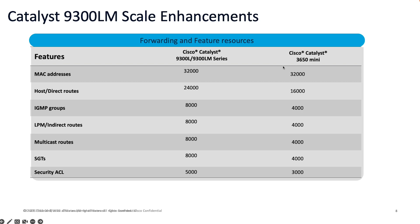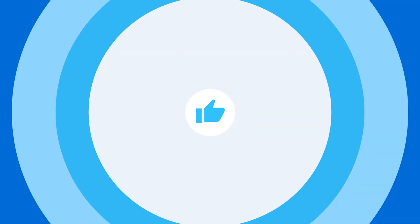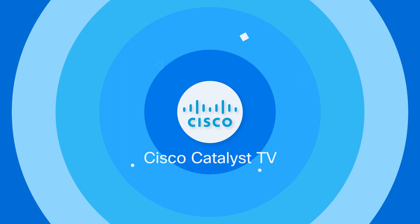The Catalyst 9300 LM series switches are in complete parity with respect to features and scale when compared with the existing 9300L family. In brief, the new Catalyst 9300 LM models — part of the Catalyst 9300L series — have been purpose-built to solve space constraint challenges and help customers enable a variety of use cases in industries like education, retail, branch, or remote offices. I hope this was informative, and I would like to thank you for viewing.